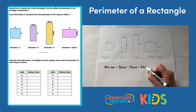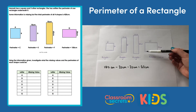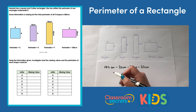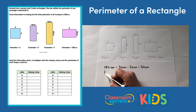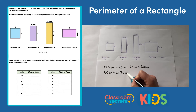That would leave us with 60cm. So we know that the value of this side and this side together is 60cm. To find one side on its own, we can do 60cm divided by 2, which equals 30cm. So the value of G is 30cm.